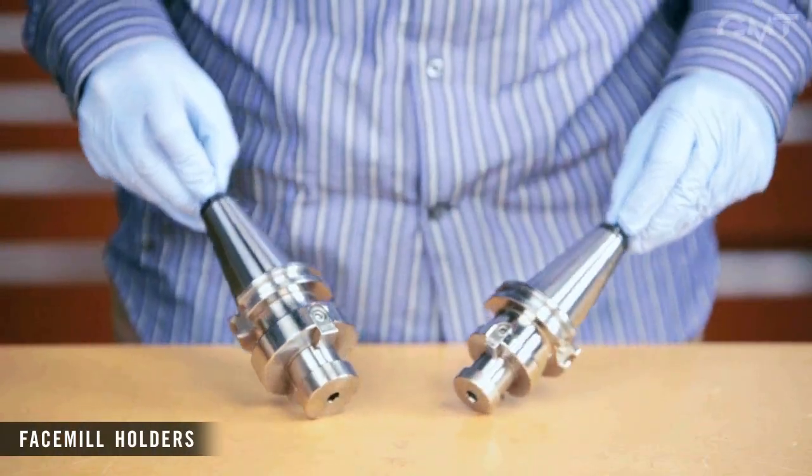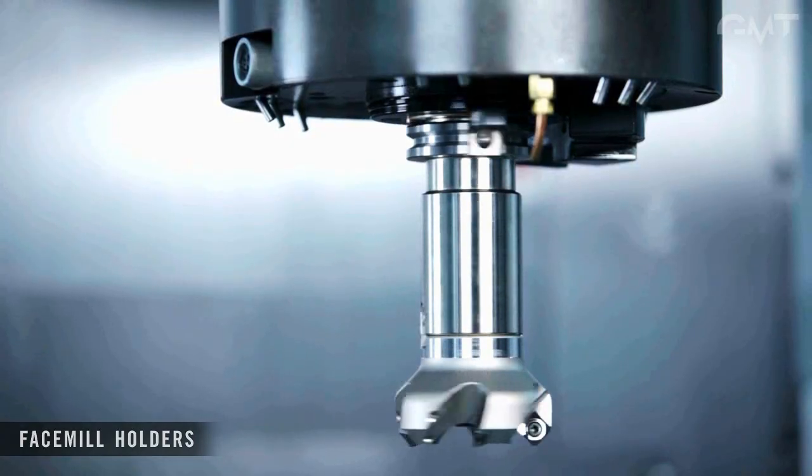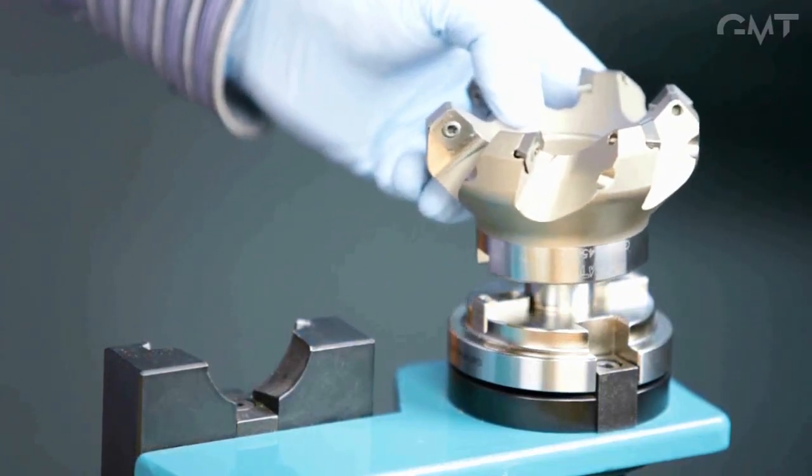Face mill holders are available in various sizes and consist of an arbor, two drive keys, and a retaining bolt.